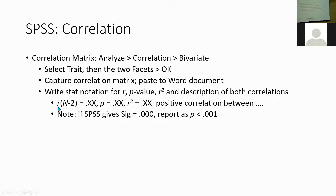This is what the stat notation should follow. You'll have your r, keep that in italics, then you'll have your degrees of freedom, which is the sample size minus 2. For your data, your sample size is 306, so you would subtract 2 and put 304 in parentheses. That would be equal to the correlation coefficient, and then you would indicate the p-value. If the p-value is 0.000, you would report it as p less than 0.001.